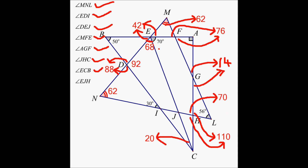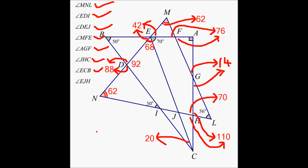Now take a look at this quadrilateral. I know three of the angles: this is 70, this is 90, this is 70. So all I need to do is from 360 subtract 70, 70, and 90. 70 plus 70 is 140, plus 90 is 230. So from 360 if you subtract 230, you are going to get 130.